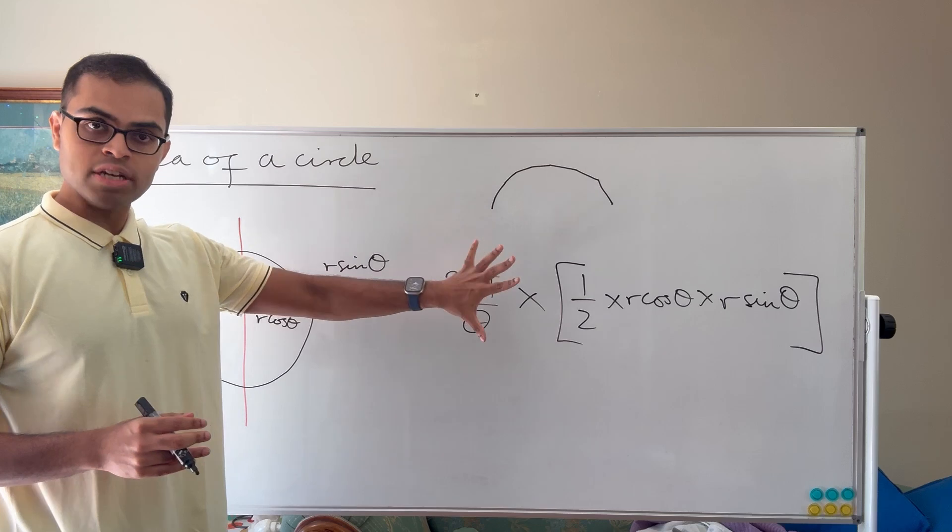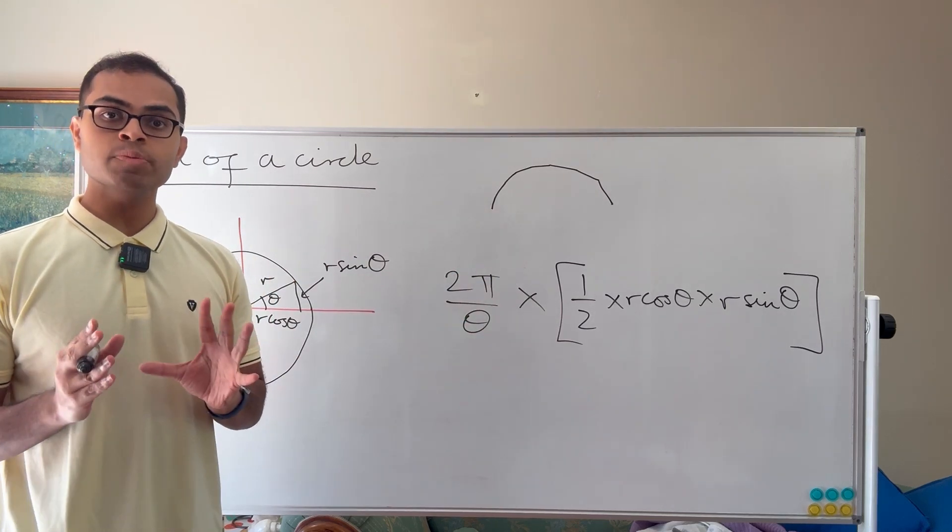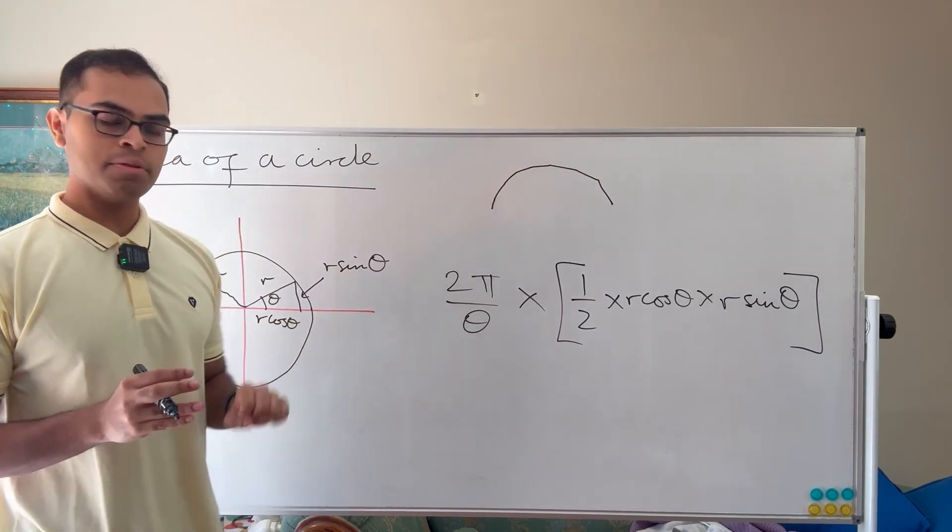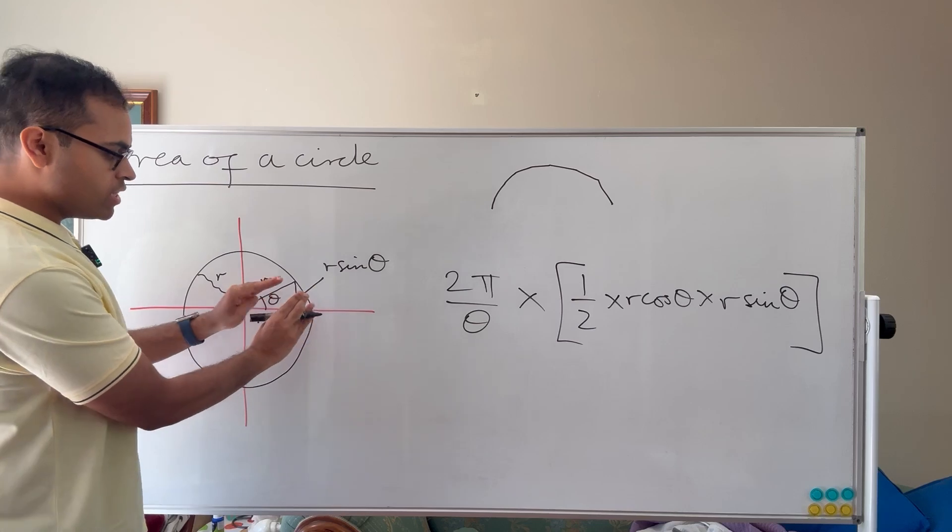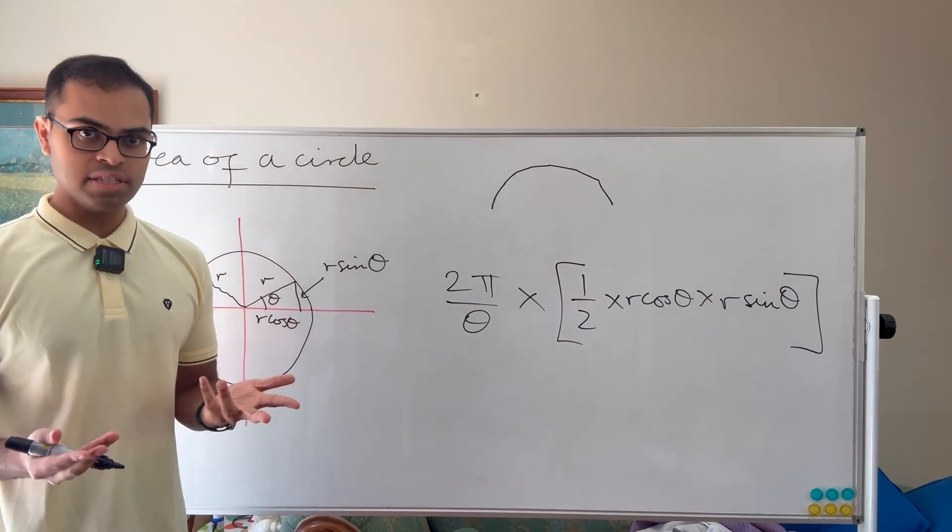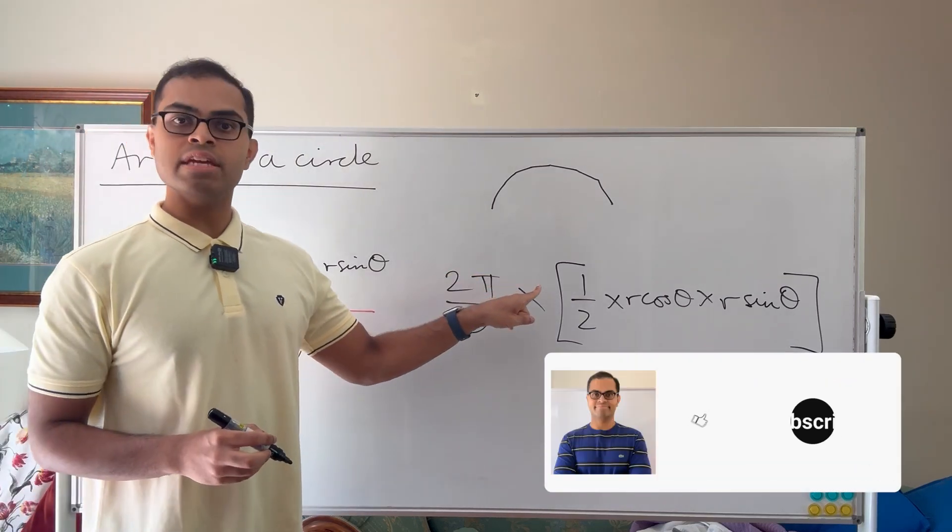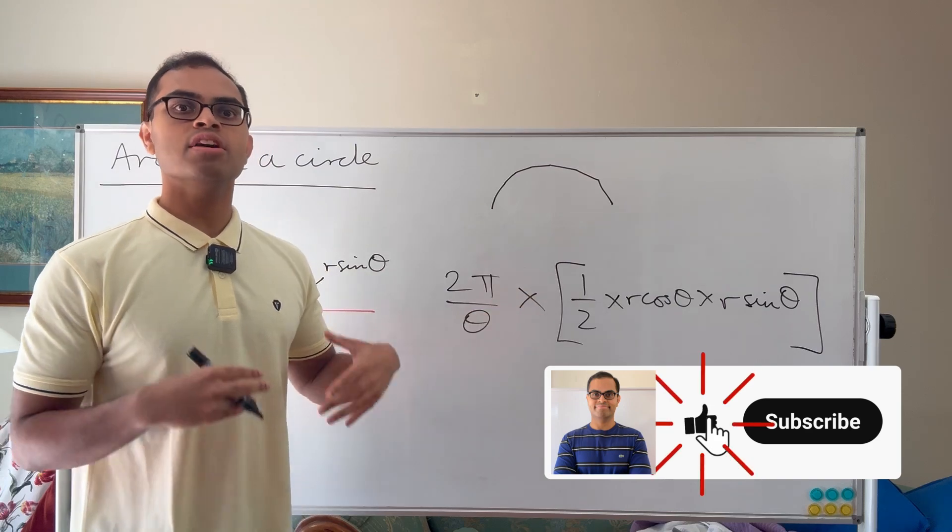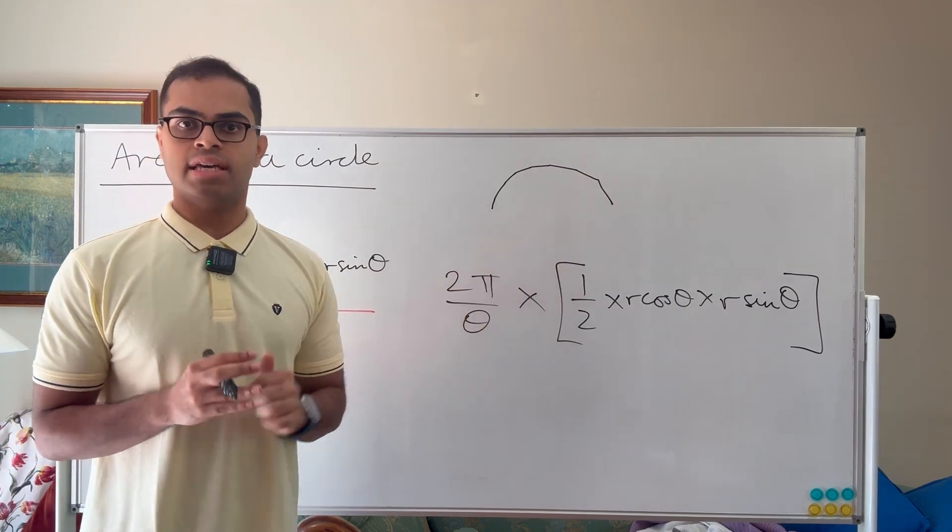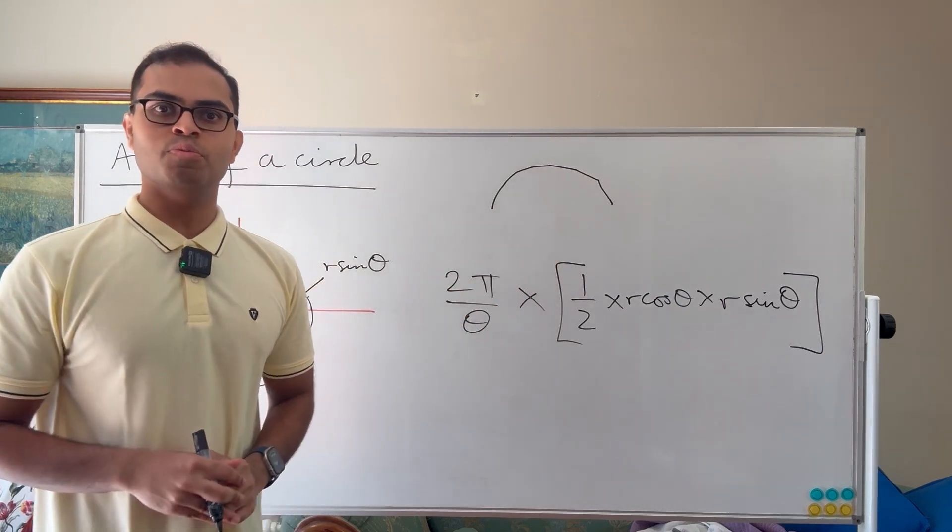But this represents a quantity that as θ gets smaller and smaller and approaches zero, so just like in that picture, your triangles get thinner and thinner, it's going to approach the area of the circle. So we need to find the limit of this expression in calculus, which is what do these numbers approach as θ approaches zero? And this is going to be so beautiful.